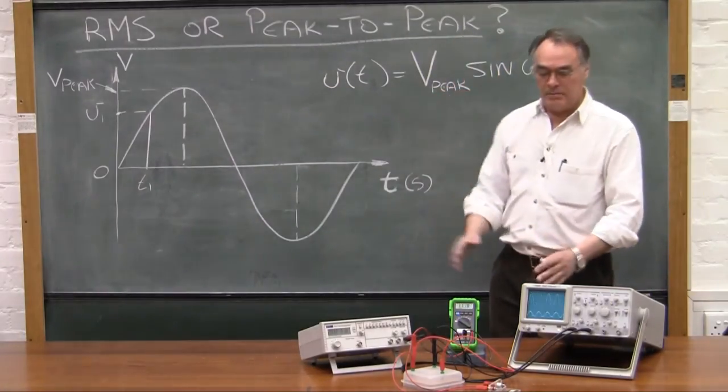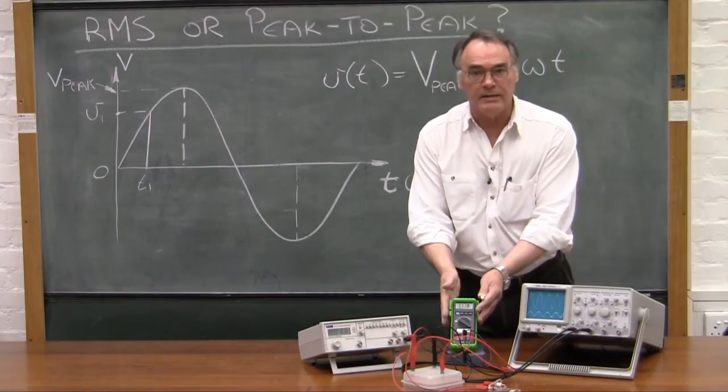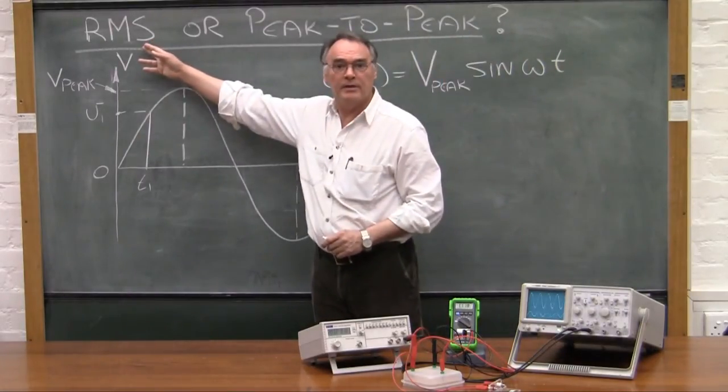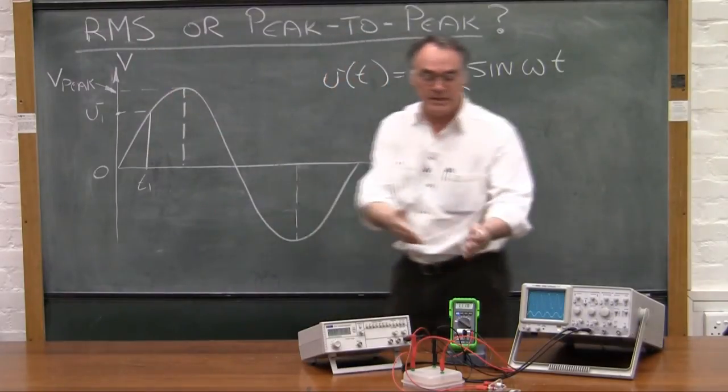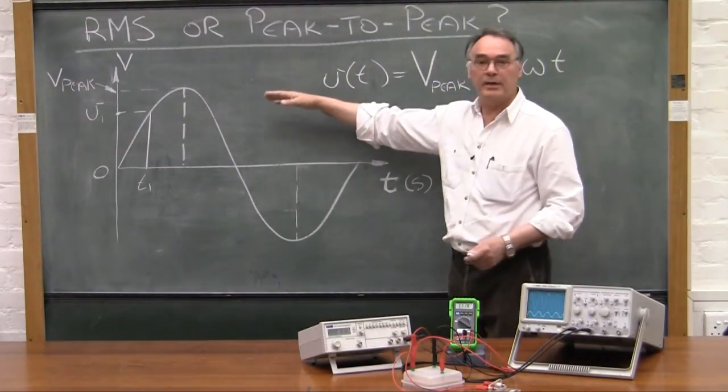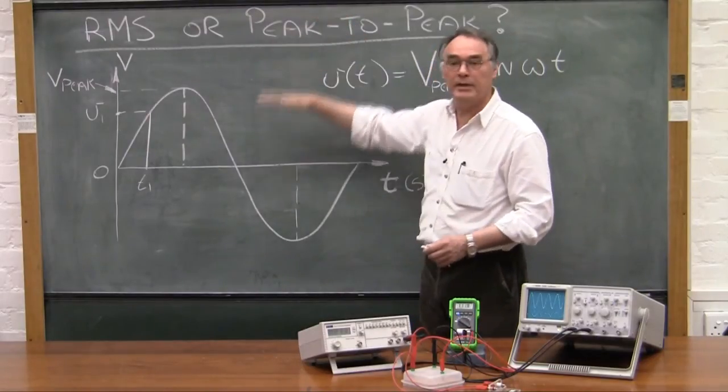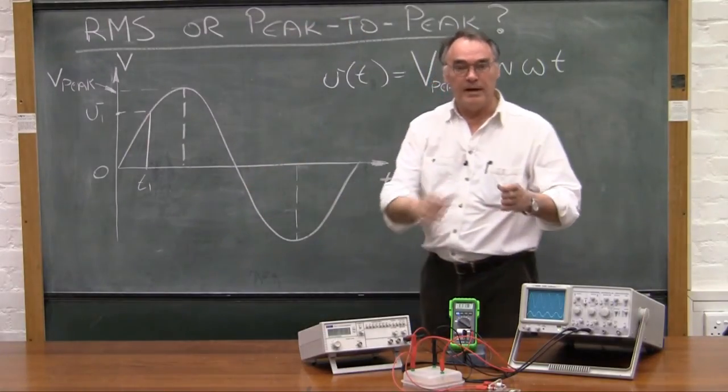But if you're using a multimeter like this, this multimeter actually gives you the RMS value, and from that RMS value once again you'd have to calculate the peak. And the relationship between the RMS, peak-to-peak, and peak values you will find in the manual.